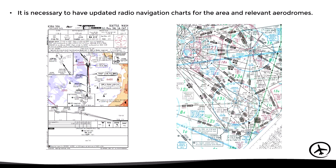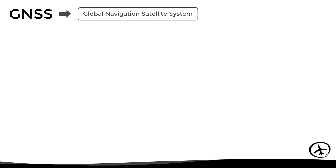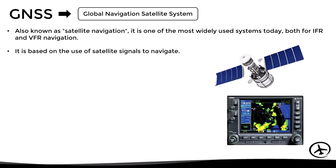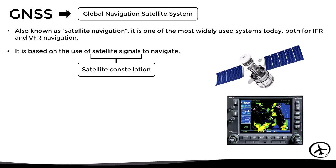Having seen radio navigation, let's continue with the GNSS, which stands for Global Navigation Satellite System. Also known as satellite navigation, this is one of the most widely used systems today, both for IFR and VFR navigation, and it is based on the use of satellite signals to determine the current position and navigate. These signals are emitted by a constellation of satellites orbiting the Earth.